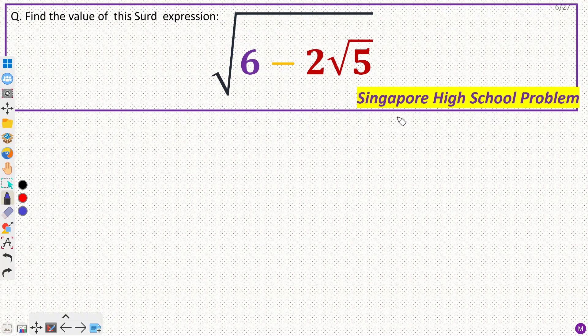Hey everyone. In this video, we will discuss the Singapore High School problem on algebra. We have to simplify this given surd expression, the square root of 6 minus 2 root 5.